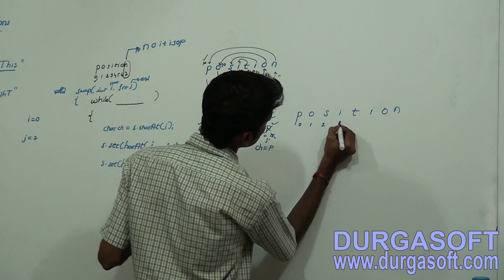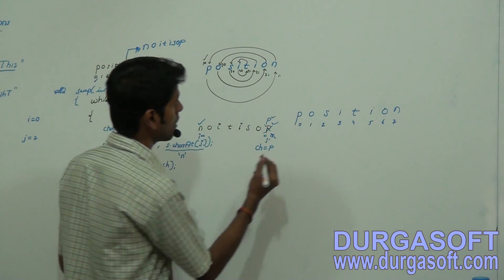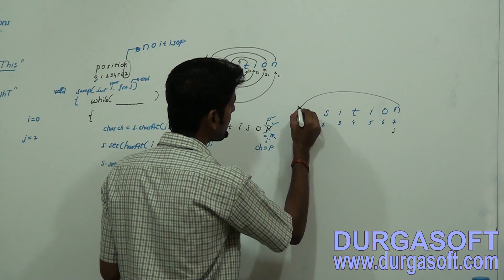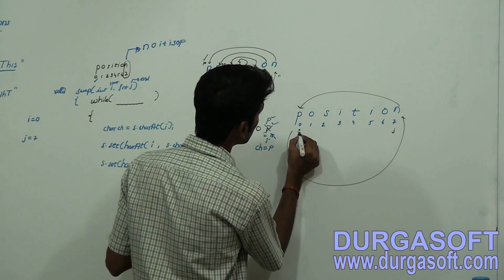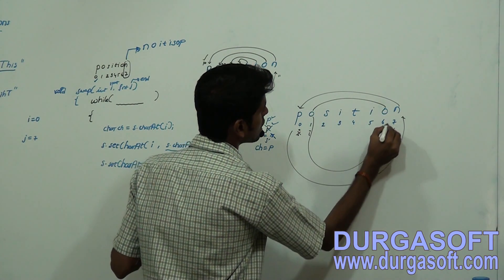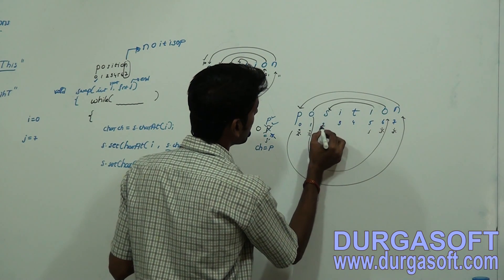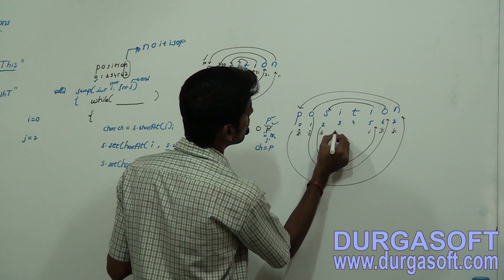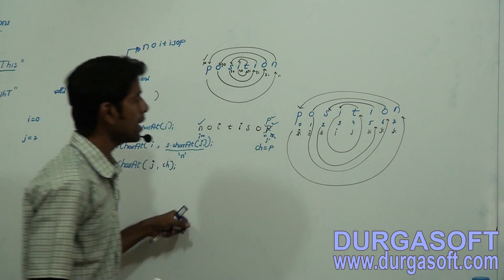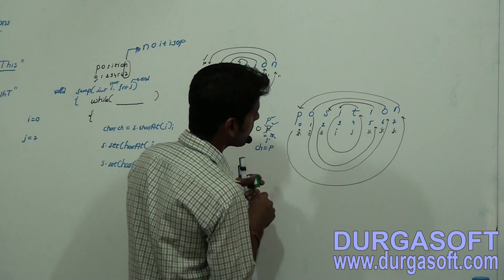Indices are 0, 1, 2, 3, 4, 5, 6, 7. i is at 0 and j is at 7. Because of i value at 0 and j value at 7, we are going to swap these two. Then i gets incremented and j gets decremented, and those two will get swapped. i increments and j decrements again. With i at 3 and j at 4, we swap those — and we have completed the reversal. This particular condition is very very important.